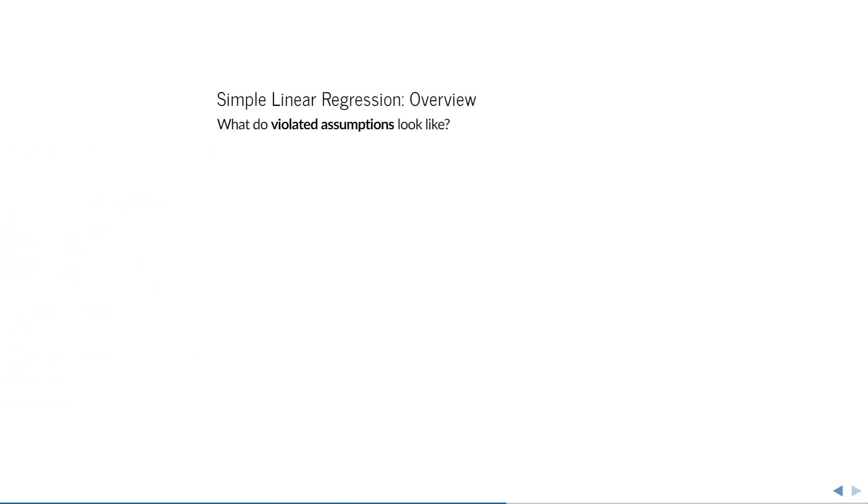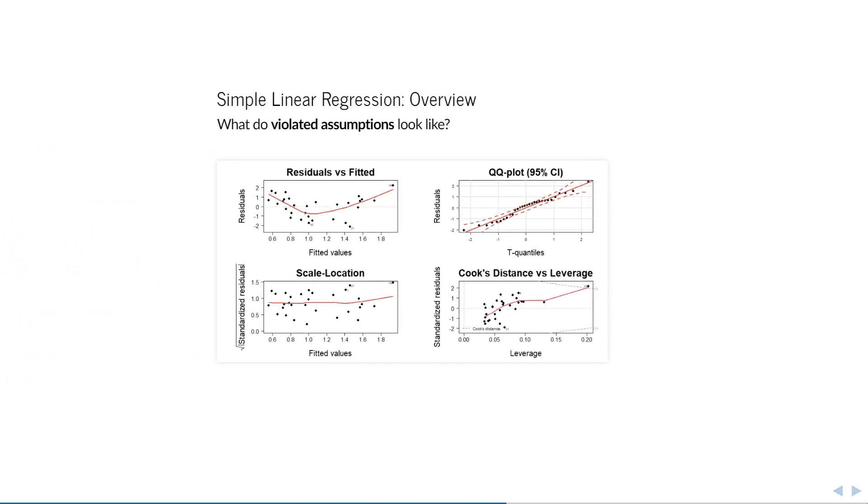What do violated assumptions then look like? Here is one example. What do you think is going on here? You can pause the video if you want, and I'll reveal the answer in a moment. If you look at the upper-left plot, you can clearly make out a parabolic shape.